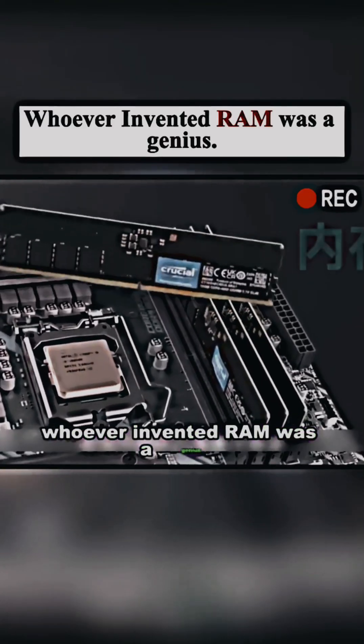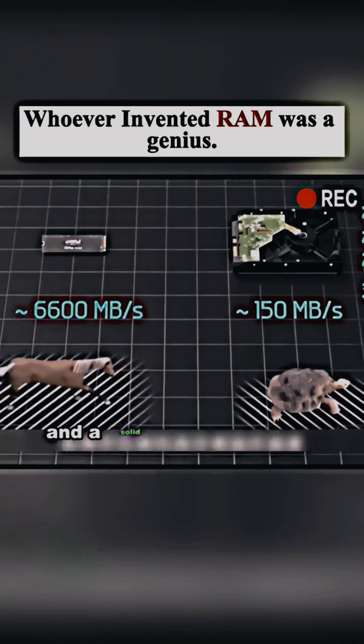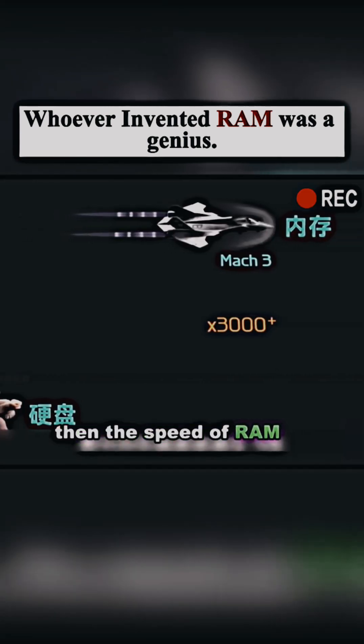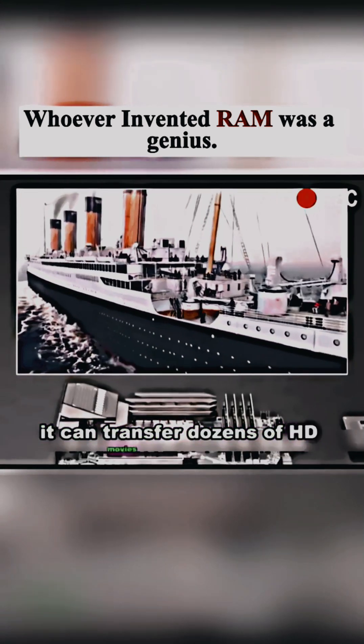Whoever invented RAM was a genius. If you compare the speed of a mechanical hard drive and a solid state drive to a tortoise and a horse, then the speed of RAM is comparable to an airplane. It can transfer dozens of HD movies in a second.